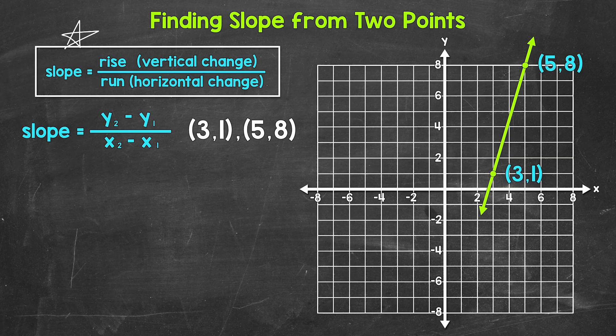Here we're going to use the coordinates of the points to find slope. We use this formula: slope equals y2 minus y1 over x2 minus x1. y2 minus y1 gives us our vertical change, and x2 minus x1 gives us our horizontal change. So this is still rise over run — we're just using the coordinates of the two points to find the rise and run.